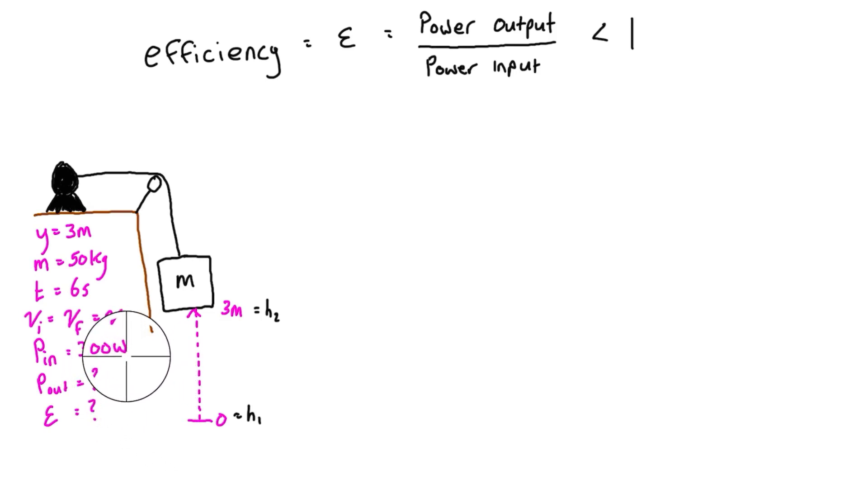In the last video, we were looking for the power output, and actually we're still looking for that, but now we've specified that there's a certain power input. Basically, the motor is being supplied with 300 watts of power.